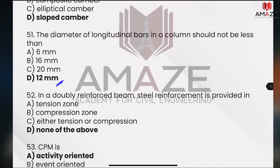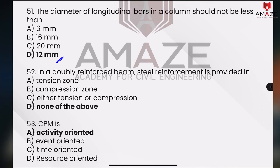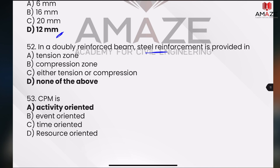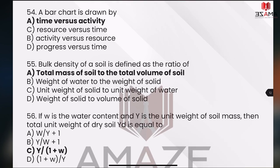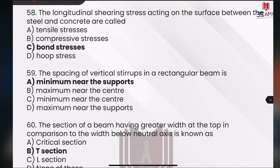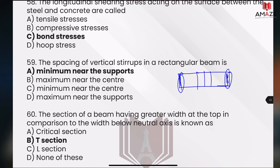RCC — the diameter of the column. In the column, we have a minimum longitude bar. W-reinforce b — there is no option, that is none of the above. CPM activity oriented — this is not a direct question. This is a rectangle beam. Spacing is vertical stirrups. As we have maximum shear, if we have vertical stirrups provided, we have no need to provide more. Then you have a small spacing — spacing is minimum near supports and maximum near the center.